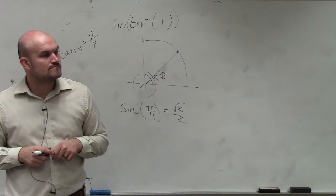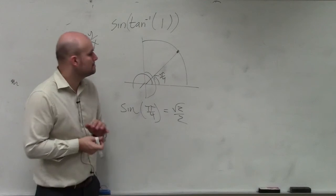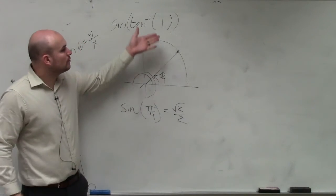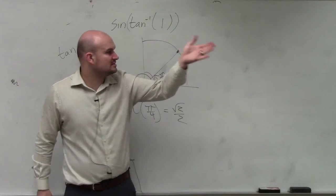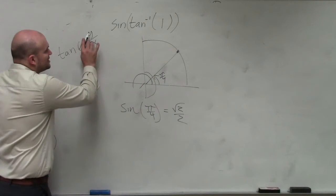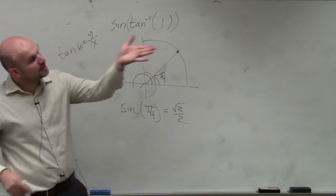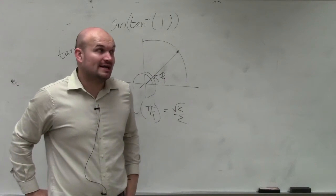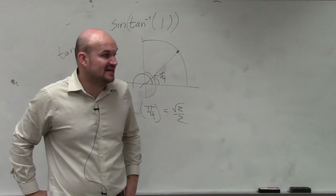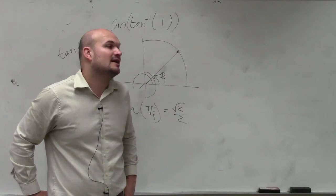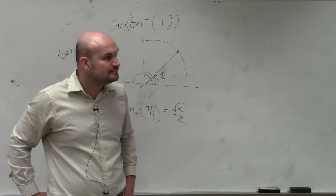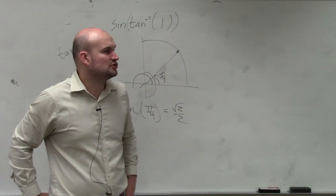Question, Libby. Tangent is the y-coordinate over the x-coordinate. Look behind you at that unit circle. What is the only angle where you take the y-coordinate over the x-coordinate and you get 1? Tell me which color triangle.